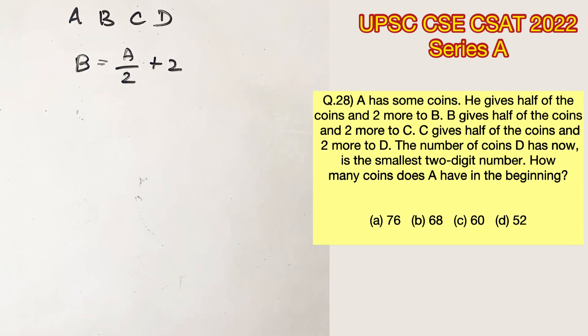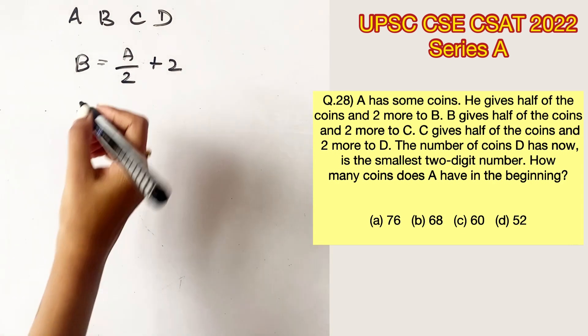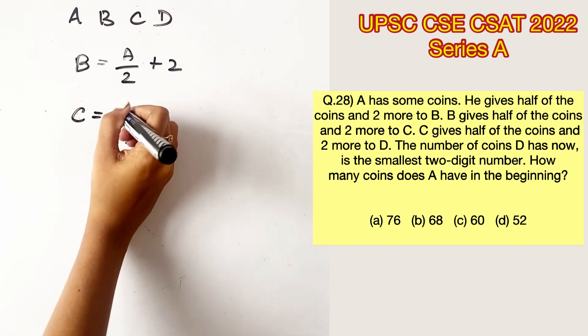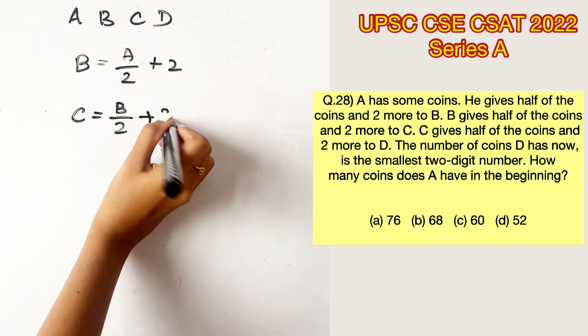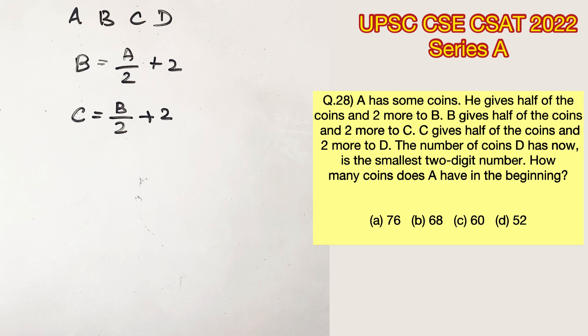he has received half of what A had plus two. The next statement says B gives half of his coins and two more to C. We can frame the same equation but in terms of C and B. So C equals B/2 plus 2.